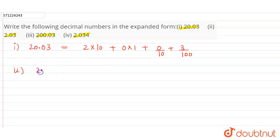Now, second part is 2.03. So, 2.03 means 2 into 1 plus 0 into 1/10 plus 3 into 1/100. This is the expanded form.